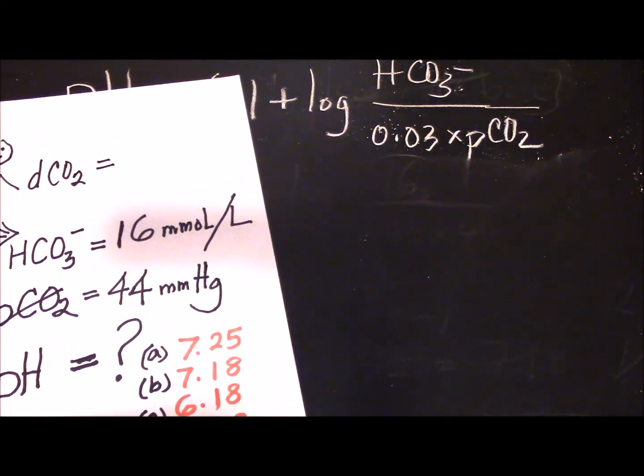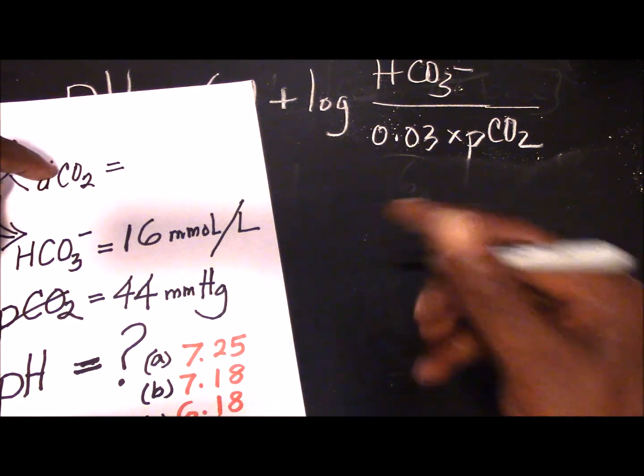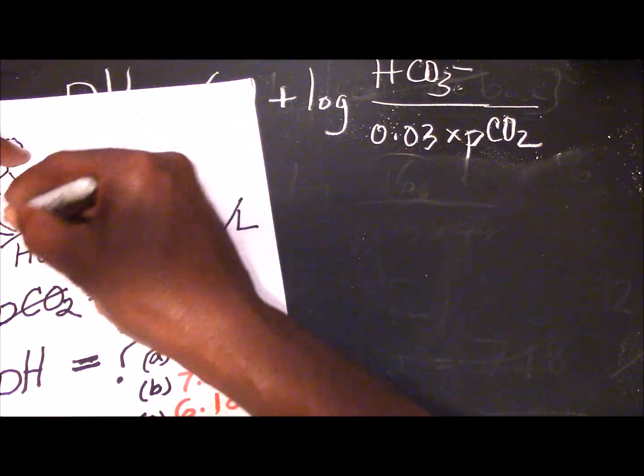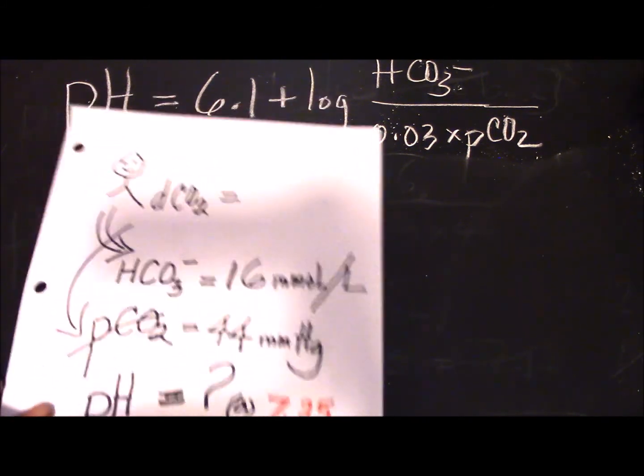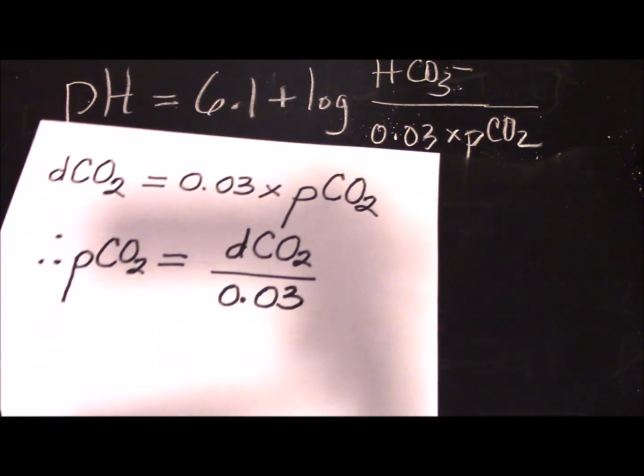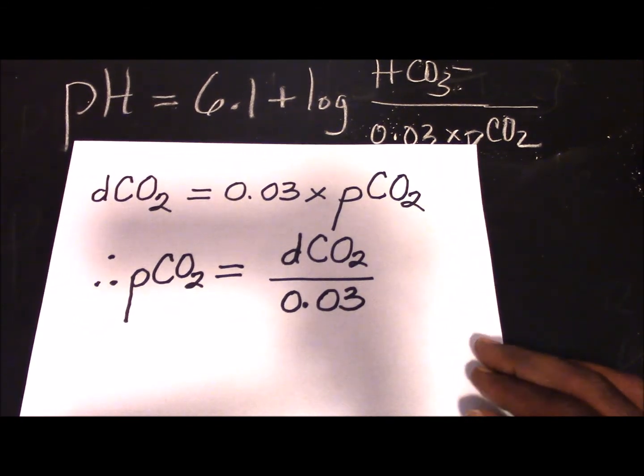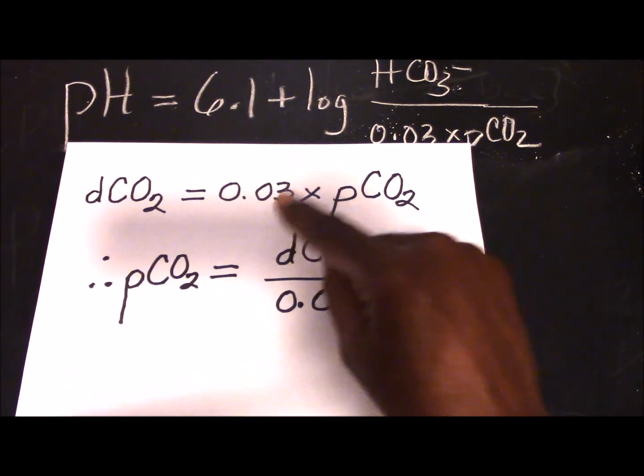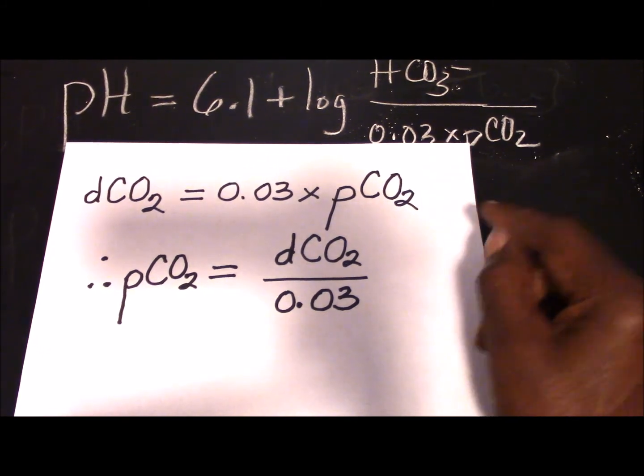So you have to establish the relationship between these. All you want to do is to get from here to here, and there is a simple relationship for that. Here is that relationship, and that constitutes the second formula you need to memorize. Write it down on your flash card: the DCO2 is given by 0.03 times the partial pressure of carbon dioxide.